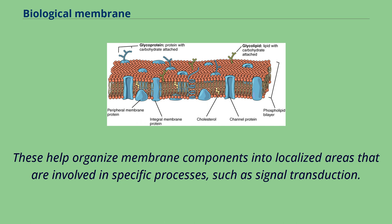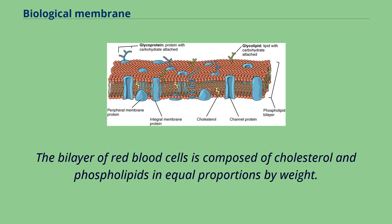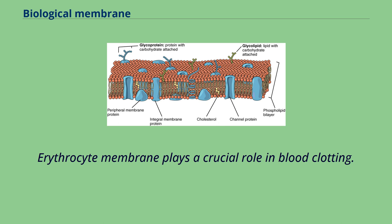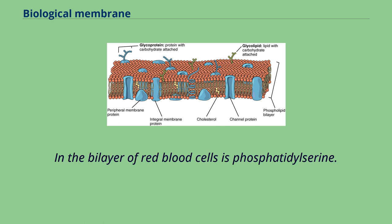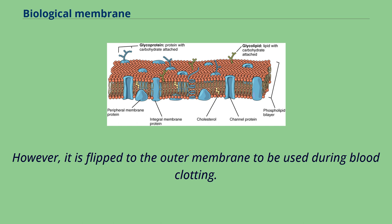Red blood cells, or erythrocytes, have a unique lipid composition. The bilayer of red blood cells is composed of cholesterol and phospholipids in equal proportions by weight. The erythrocyte membrane plays a crucial role in blood clotting. Phosphatidylserine is present in the bilayer of red blood cells, usually on the cytoplasmic side of the membrane; however, it is flipped to the outer membrane to be used during blood clotting.